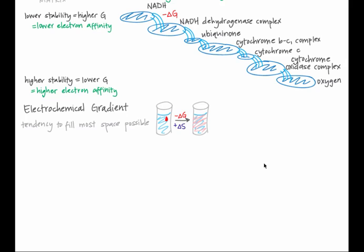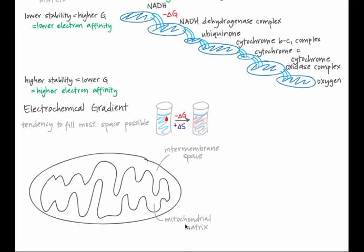Hydrogen ions also move to fill the most space possible. Inside mitochondria, there are two compartments: the mitochondrial matrix and the intermembrane space. The citric acid cycle occurs in the matrix, so this is where the majority of NADH and FADH2 are made. As electrons are passed from those molecules through the electron transport chain, hydrogen ions are pumped into the intermembrane space. The inner mitochondrial membrane is not freely permeable to hydrogen ions.